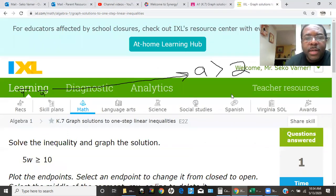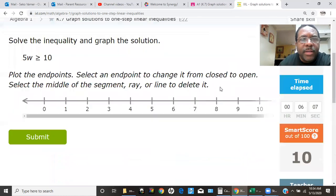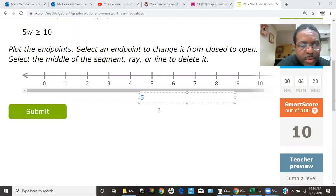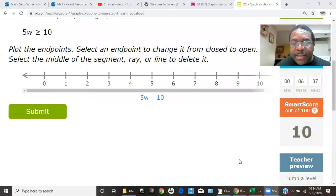Let's do the same thing with this problem. The directions are solve the inequality and graph the solution. This is the inequality because it has a greater than or equal to sign. So I'm going to type it right here just so I have some room to work with. 5w, and 5w is actually 5 times w, is greater than or equal to 10.